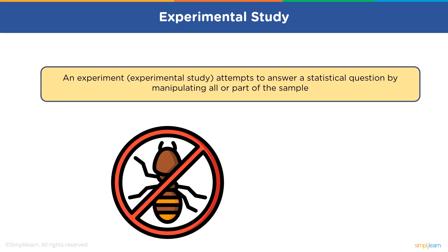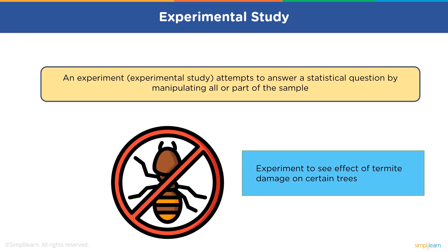Suppose that an observational study indicated that certain types of trees did not have as much termite damage as other trees. Researchers wondered if the resins from the trees were toxic to termites, so they decided to do an experiment where they exposed some termites to the resin and others to plain water, and recorded whether the termite survived. The explanatory variable — that is, the treatment variable — is the exposure type: resin or plain water. And the response variable is whether or not the termite survived. We can say that this is an experiment because the researchers imposed a treatment on the subjects. This can be termed as an experimental study.